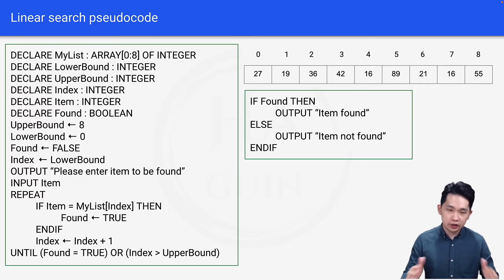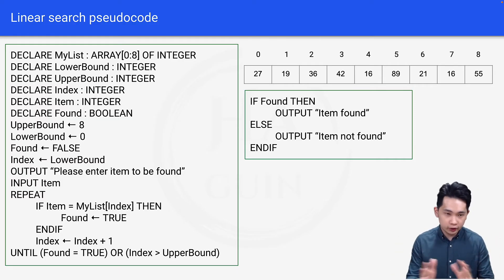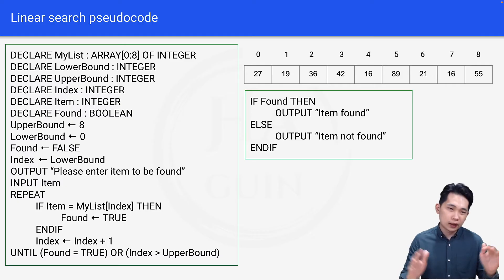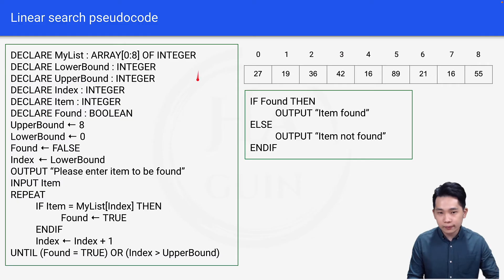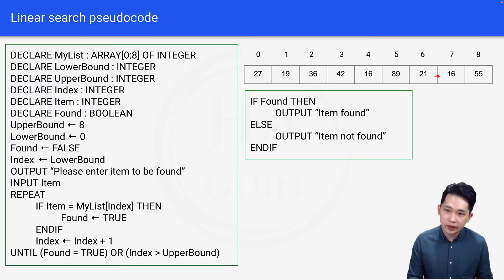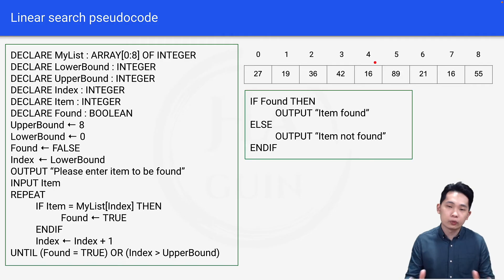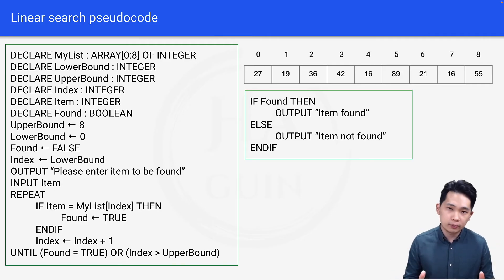That's the linear search pseudocode. If this is your first time looking at it, it might seem complicated. Just pause the video, go through the pseudocode line by line, and try a walkthrough using the example. Now let's go straight to coding in Python so you can watch the live demo.